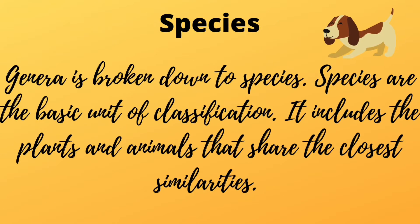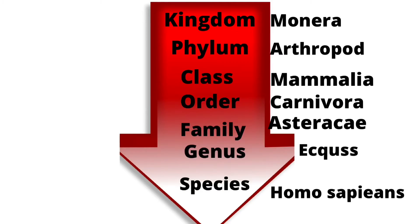Species. Genera are broken down to species. Species are the basic unit of classification and includes the plants and animals that share the closest similarities. Species is the lowest rank in the taxonomic rank of classification, and organisms in a species group share the closest similarities. As the arrow depicts in this picture, the lower you go in the taxonomic rank of classification, the more in common the organisms will have with the others in their group.